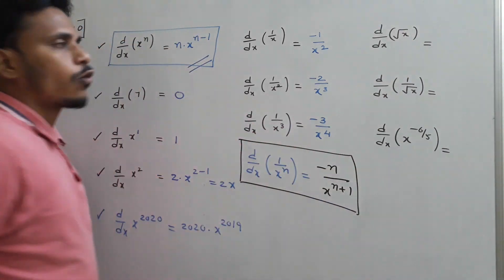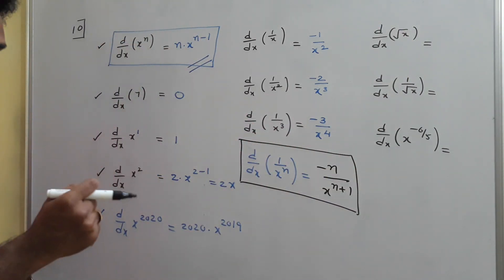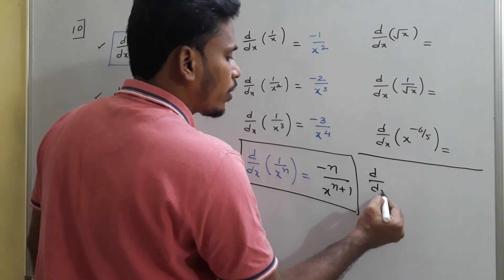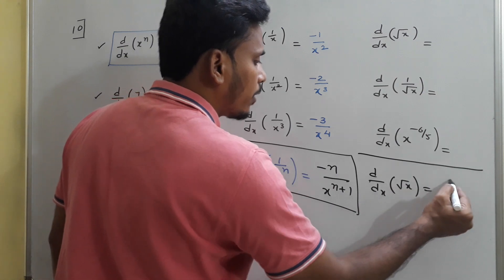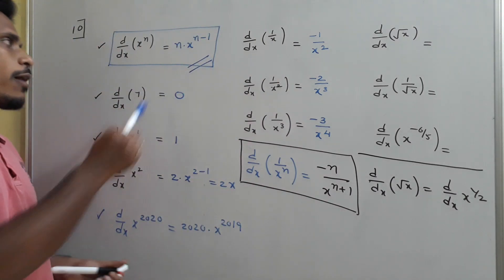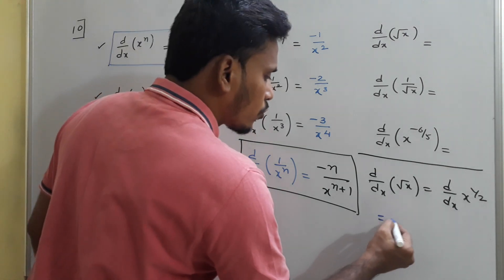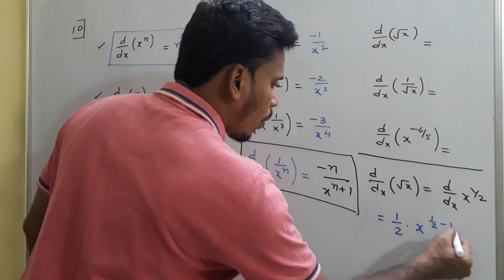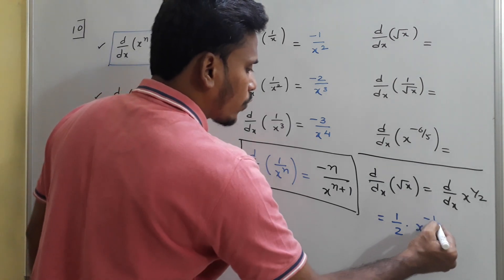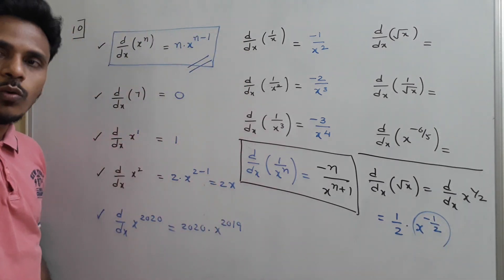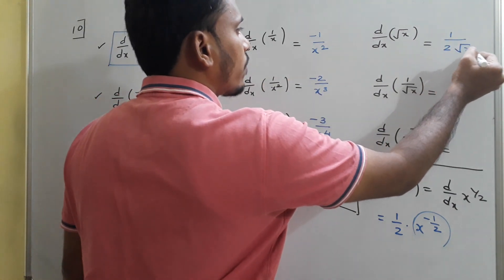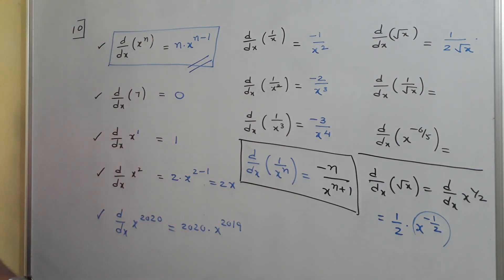For d/dx of √x, rewrite √x as x^(1/2). Applying the rule with n = 1/2: (1/2) times x to the power 1/2 minus 1. Since 1/2 minus 1 is -1/2, and x^(-1/2) is 1/√x, the result is (1/2)(1/√x), giving d/dx of √x equals 1/(2√x).